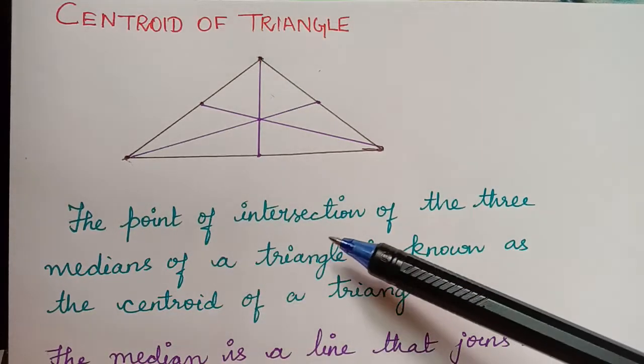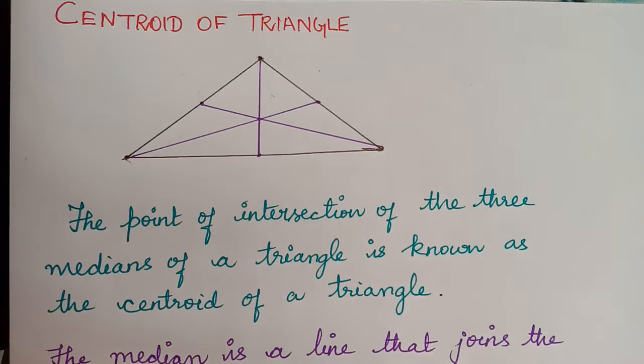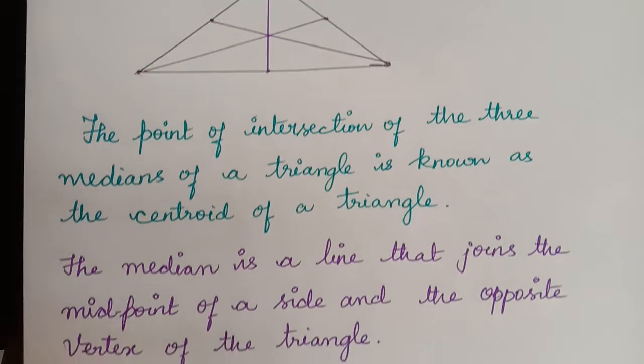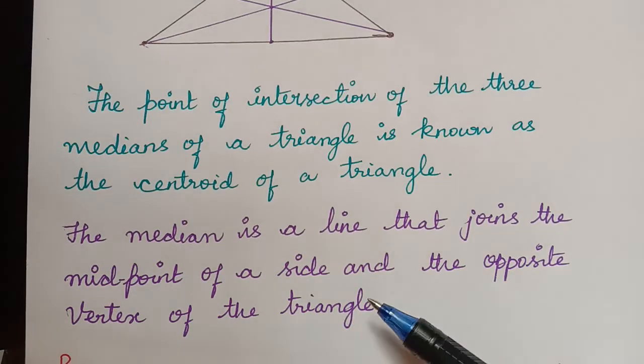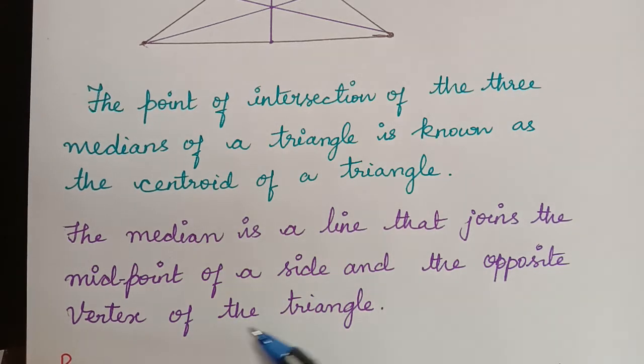The point of intersection of the three medians of a triangle is known as the centroid of a triangle. So what are these medians? The median is a line that joins the midpoint of a side and the opposite vertex of the triangle.